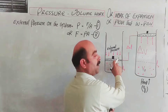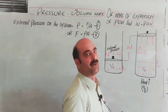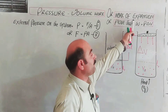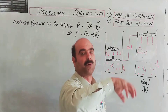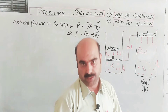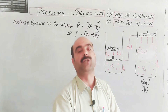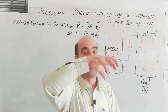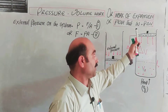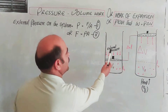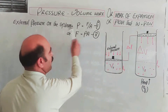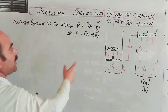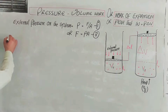The force is applied and the piston covers a distance — force multiplied by distance. The external pressure: P is equal to F over A, so F is equal to P times A. After that, the system does work. When the system does work, a heat supply causes the internal energy to change — delta E.